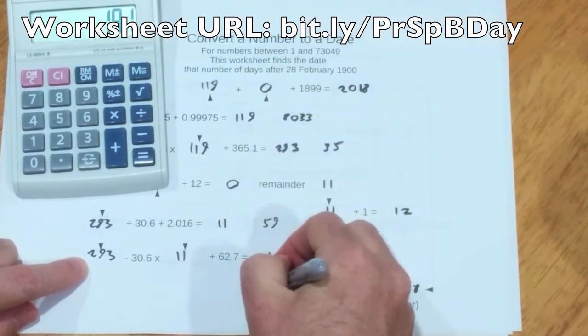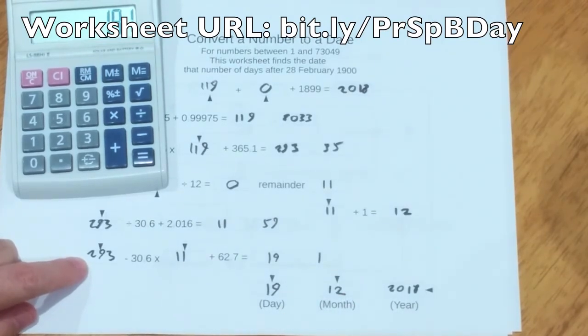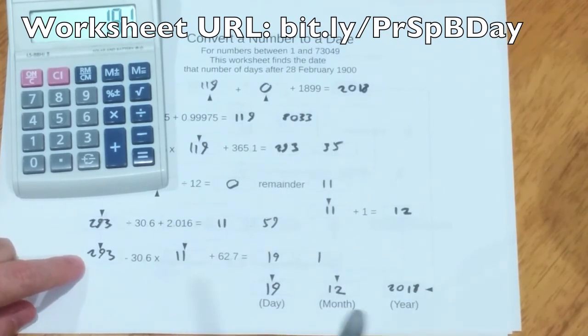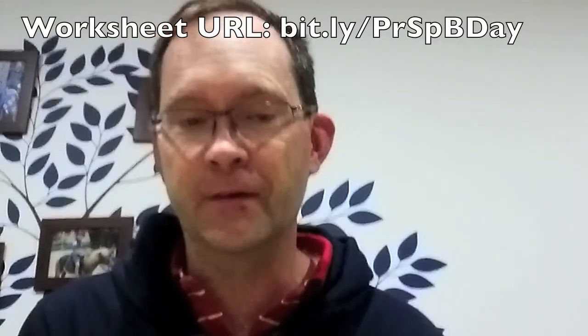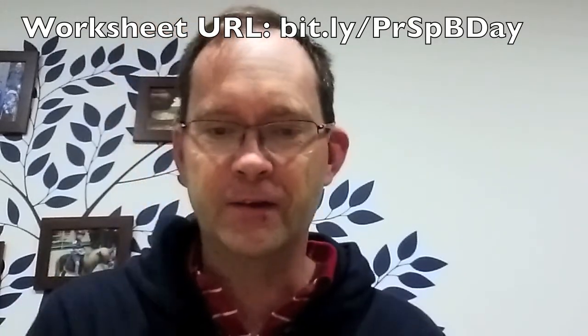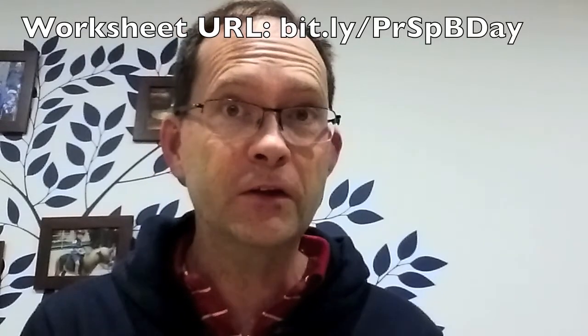Neil Armstrong's Saturn birthday, after the day he died, is the 19th of December 2018. And he'll be three years old. I hope his friends have a cake for him. A Saturn-shaped cake. And that's how this worksheet works.